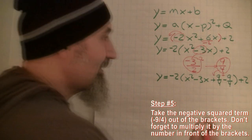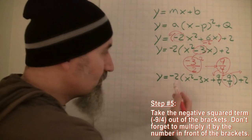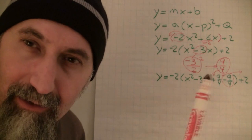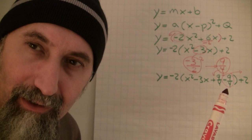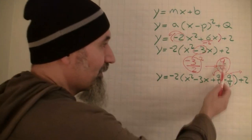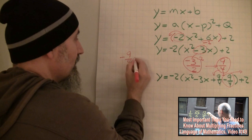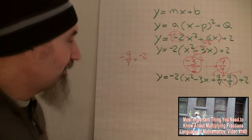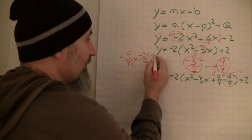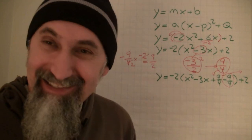The next step is we take the negative 9 over 4 out of the bracket. When we take it out, we have to multiply it by whatever's guarding it outside the bracket. So we do the calculation: negative 9 over 4 times negative 2. Negative times negative is positive, the 2 reduces it down, so this becomes 9 over 2. That's what's going to come out of the bracket.